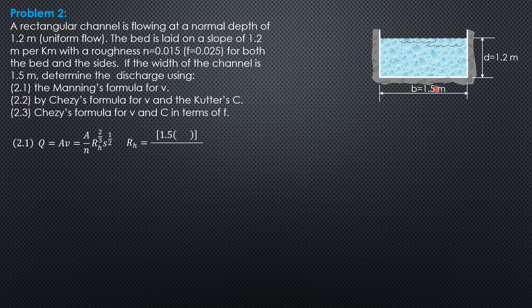Hydraulic radius is area, 1.5 times 1.2 over wetted perimeter, 1.5 plus 2 times 1.2. So the hydraulic radius is 6 over 13 meter. So the slope is 1.2 per kilometer, 1.2 meters per kilometer. So that's 1.2 divided by 1,000, so 0.0012.